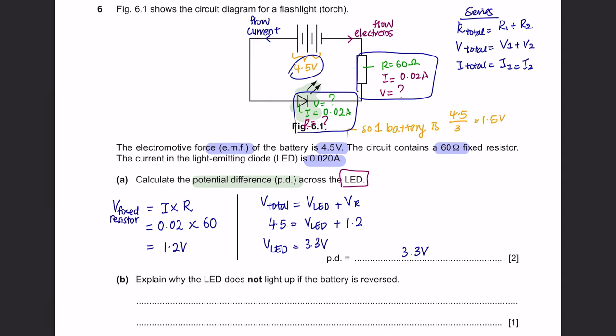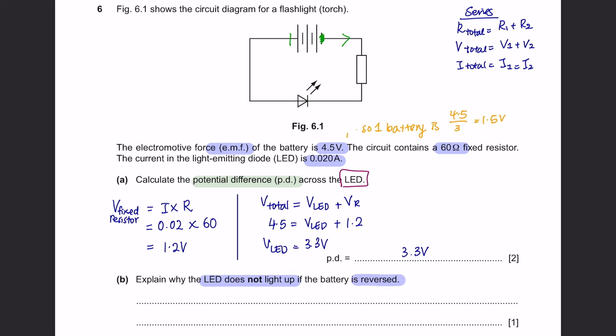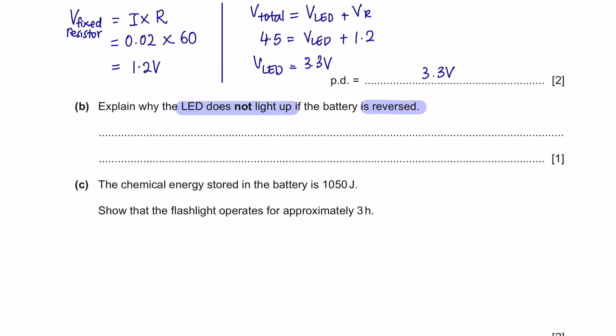Next, question B. Explain why the LED does not light up if the battery is reversed. If the battery is reversed, the current will flow in this direction. LED is a diode which only allows current in one direction. If the diode is placed like this, the current has to flow in this direction. So if the current is now flowing in this direction which is the opposite, it will stop the current from flowing. Therefore, the circuit now will be incomplete.